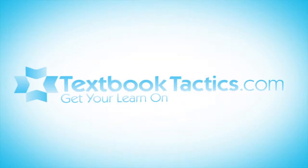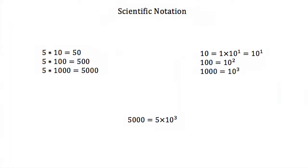This is a tutorial on scientific notation. We know that 5 times 10 is 50, 5 times 100 would be 500, and 5 times a thousand is 5,000.